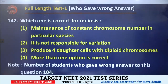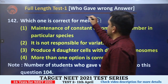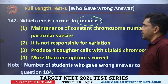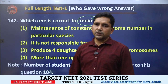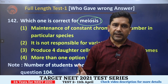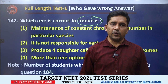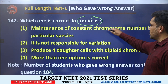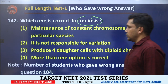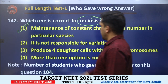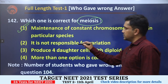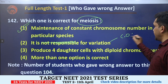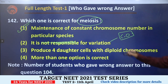Next, question number 142. Which statement is correct for meiosis? The correct answer is: maintenance of constant chromosome number in a particular species generation after generation. The purpose of meiosis is that during meiosis I, chromosome number is halved — if 46, then gametes have 23 each. When male and female gametes fuse, the number returns to 46. So meiosis maintains constant chromosome number generation after generation. The option saying meiosis is not responsible for variation is wrong — meiosis involves crossing over, which causes genetic exchange.